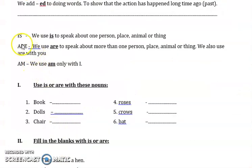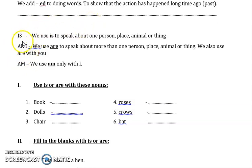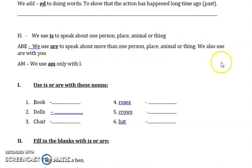Now we will learn about is, am and are. They are called linking verbs. We use is to speak about one person, place, animal or thing. If it is more than one person, place, animal or thing, we use are.